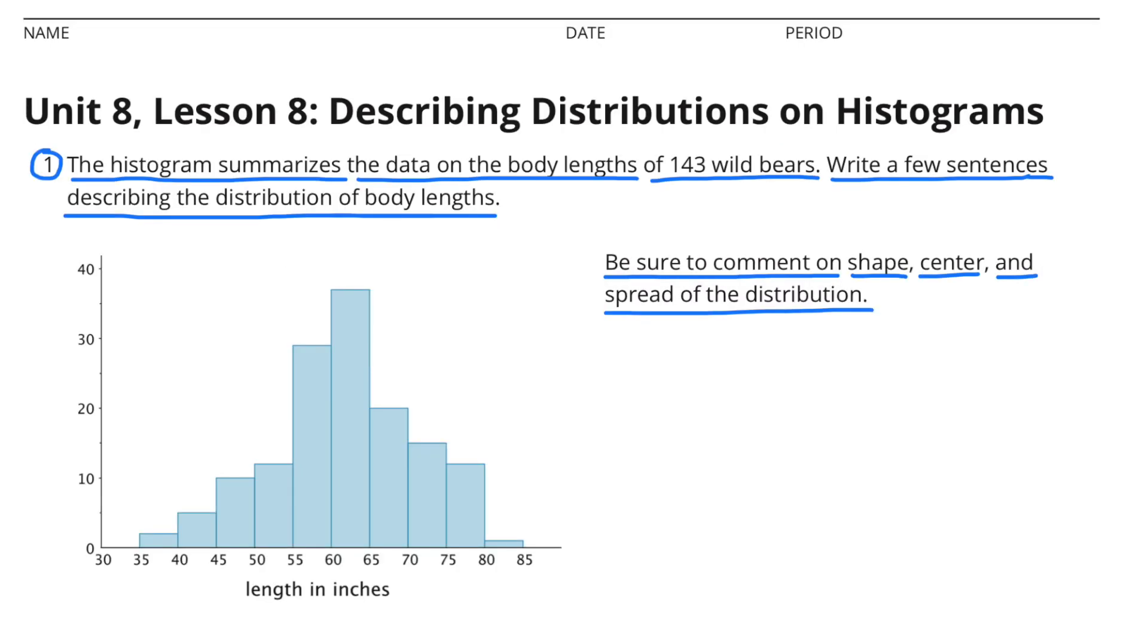Number 1. The histogram summarizes the data on the body lengths of 143 wild bears. Write a few sentences describing the distribution of body length. Be sure to comment on shape, center, and spread of the distribution.